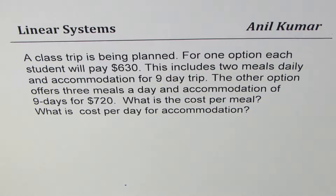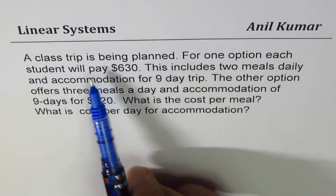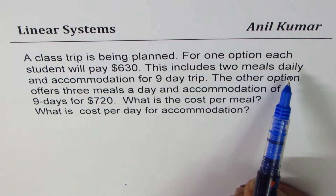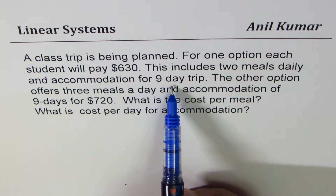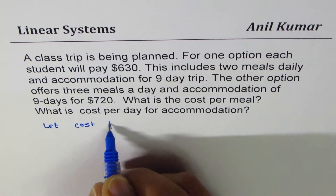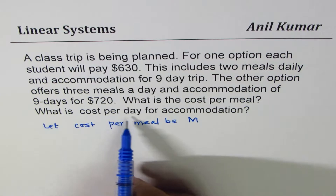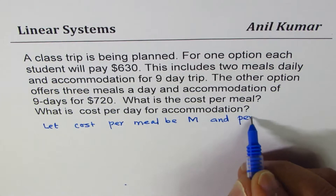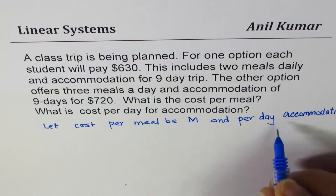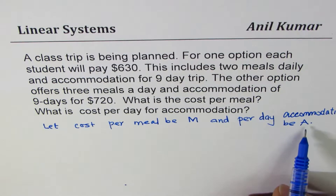You can always pause the video, answer the question, and then look into my suggestions. Whenever you have a word problem, it is necessary to define variables. In this case, we are organizing a trip. We need to find cost per meal, so let cost per meal be m, and let cost per day for accommodation be a. These are the two variables we work with: m for meals per day, a for accommodation per day.